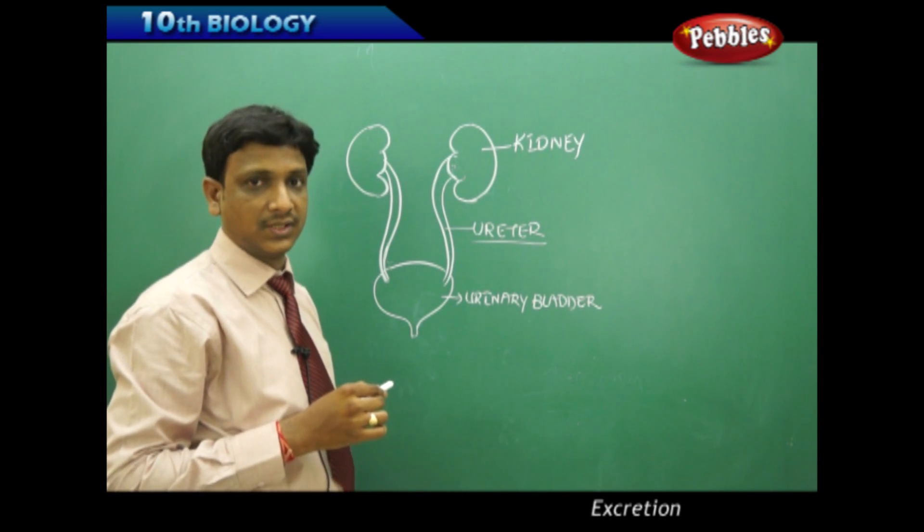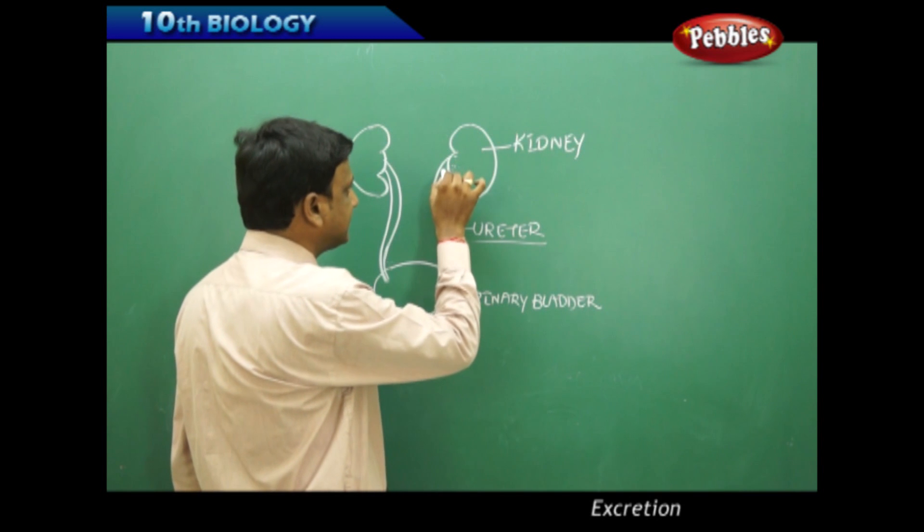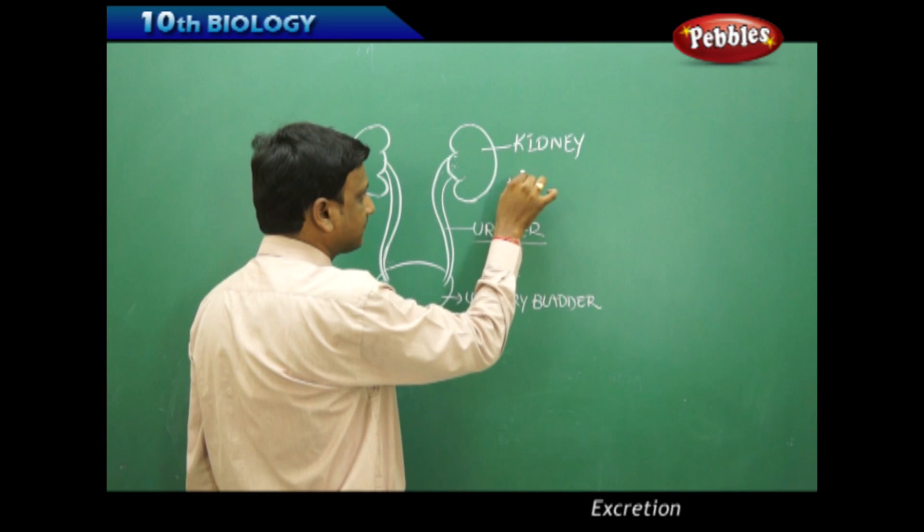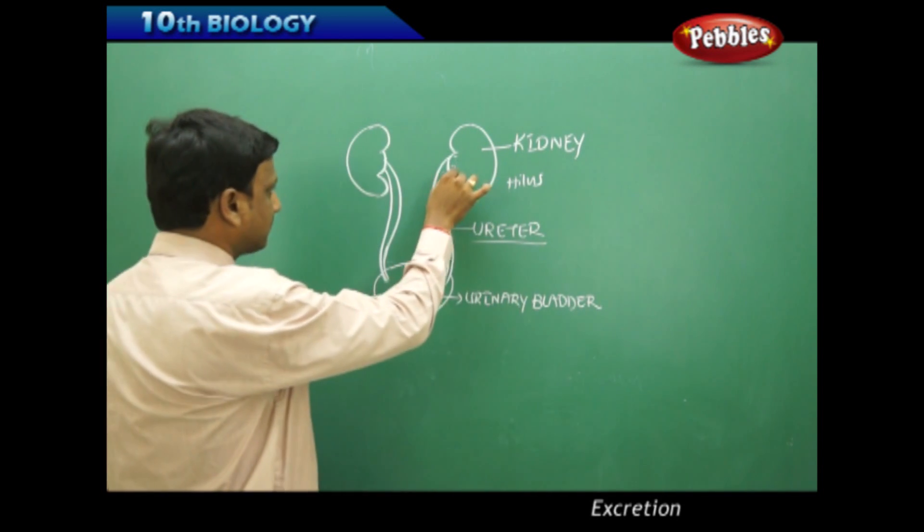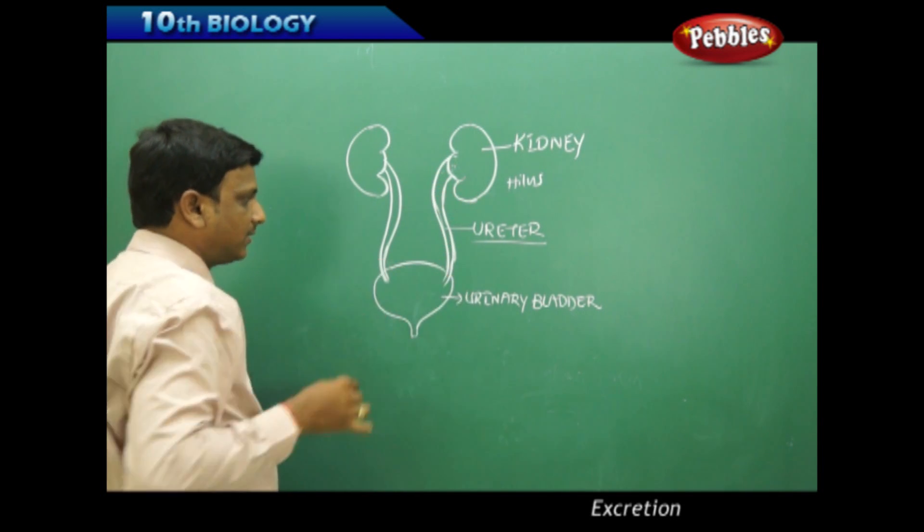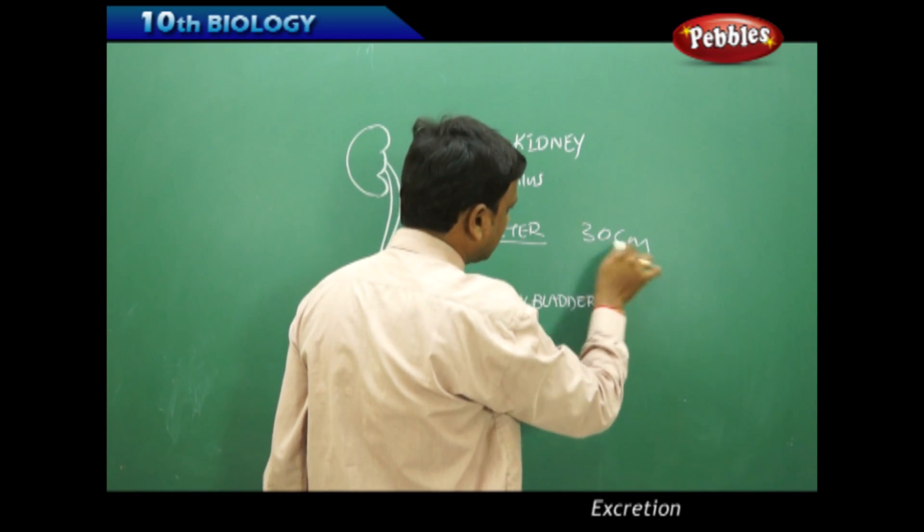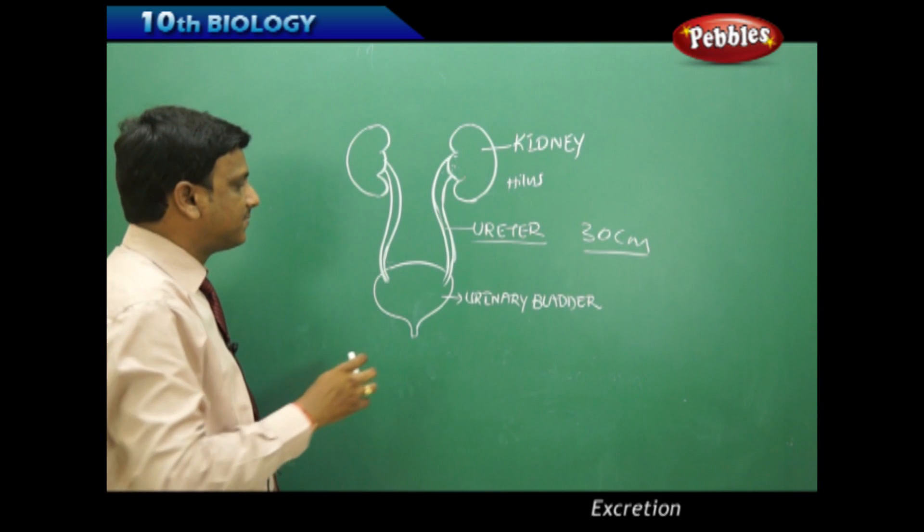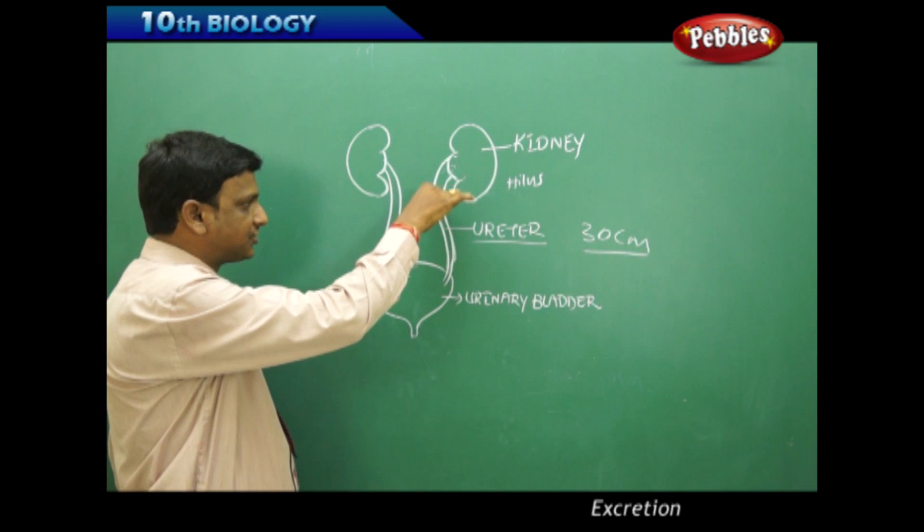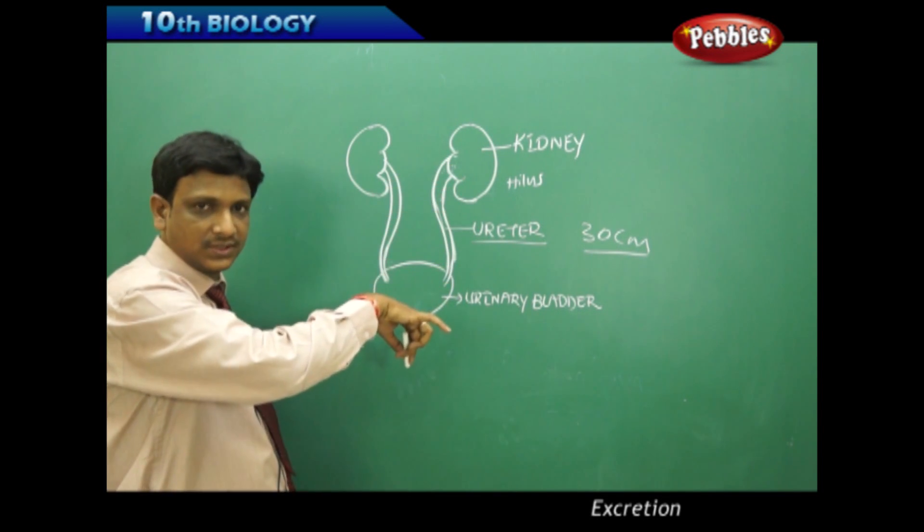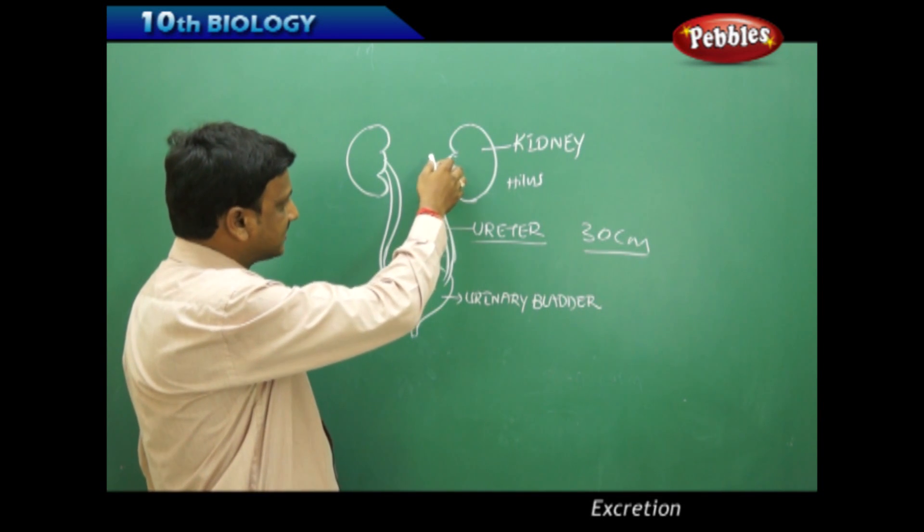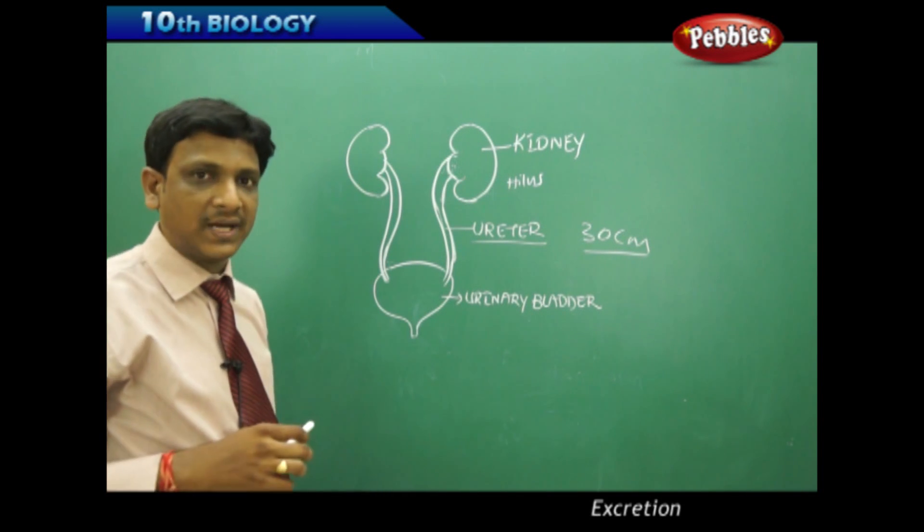We have a pair of ureters arising from the hilus region of the kidneys. Left kidney, right kidney—they have a region called the hilus. From this region, the ureters originate and extend up to the urinary bladder, and their length is around 30 centimeters. In the abdominal cavity, these ureters arise at the hilus part of the kidney and obliquely travel downwards to the urinary bladder. Whatever urine is created in the kidneys is collected and transported to the urinary bladder by the ureters.